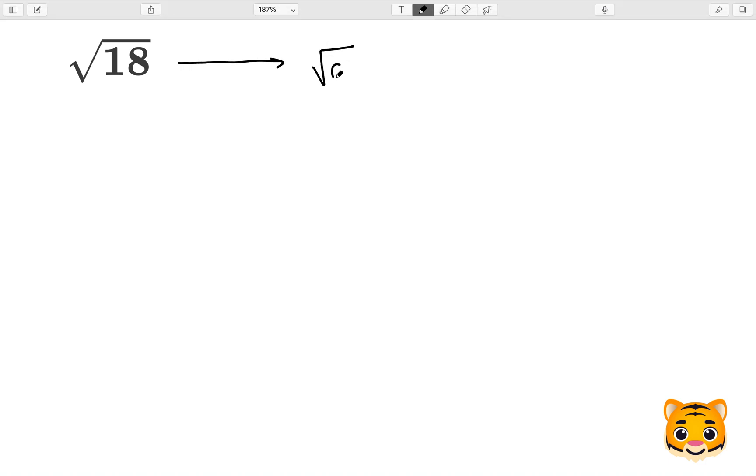If we see something like the square root of a times b, which could both just be two values, we can change this into the square root of a times the square root of b. So we can break up that square root.